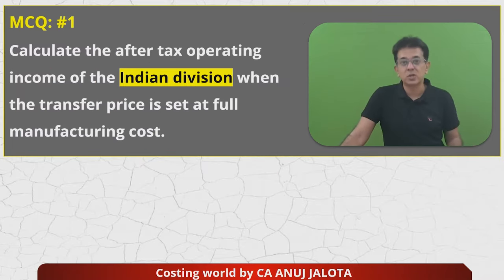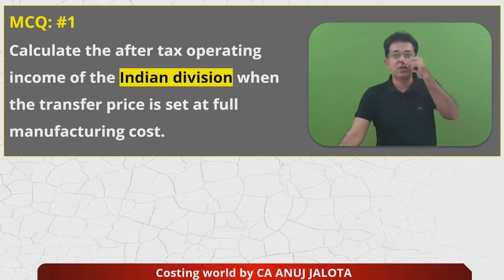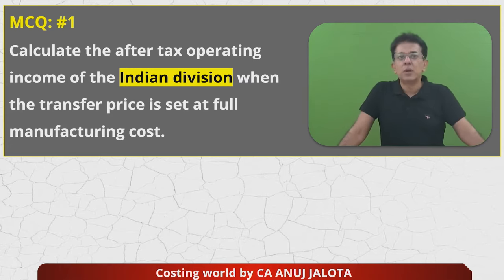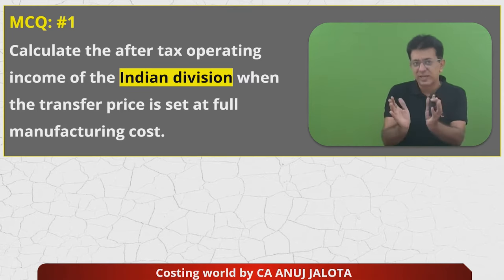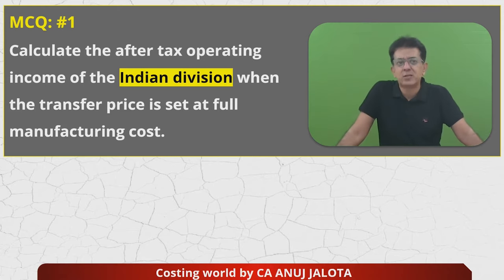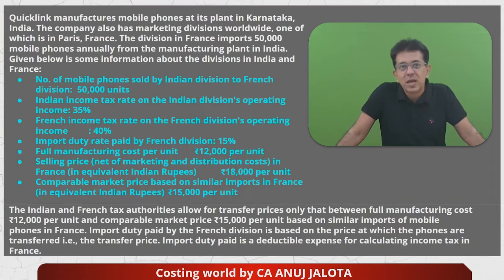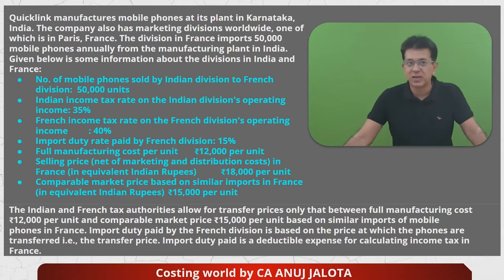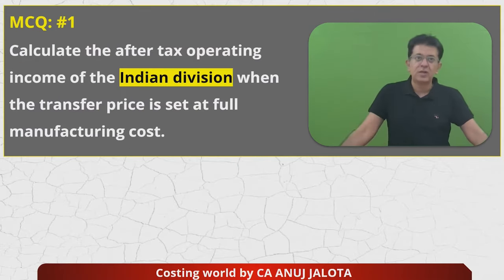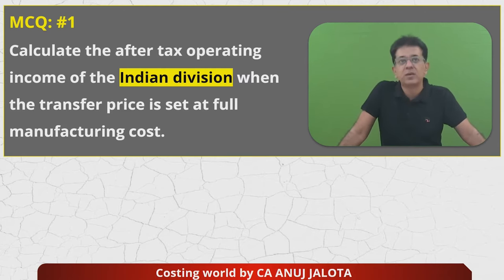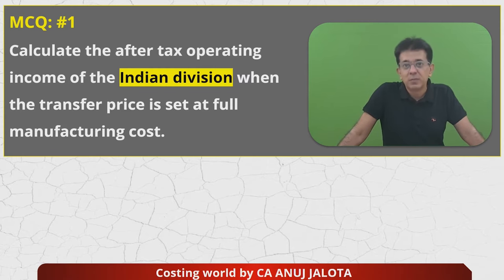Now let's look at the MCQs. MCQ number one: calculate the after-tax operating income of the Indian division when the transfer price is set at full manufacturing cost. Full manufacturing cost was given as ₹12,000 — check the fifth bullet. So the transfer price is ₹12,000 and you have to compute the operating income of the Indian division. The four options are: ₹60 crores, ₹9.75 crores, nil, and ₹12.60 crores.